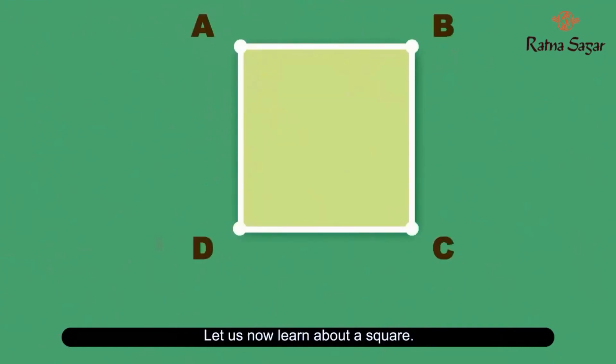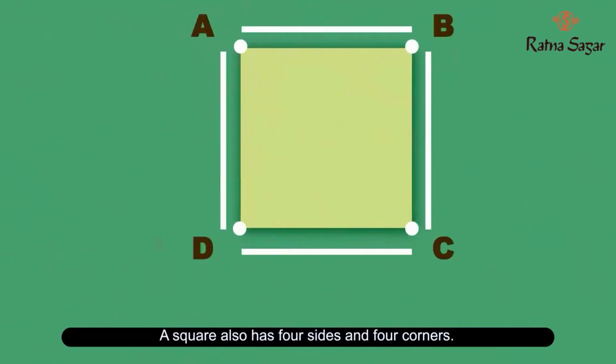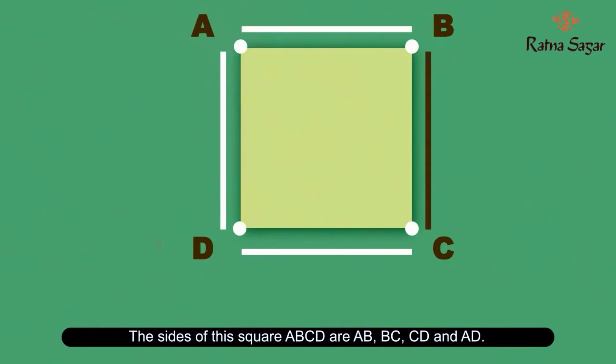Let us now learn about a square. A square also has 4 sides and 4 corners. The sides of this square ABCD are AB, BC, CD, and AD.